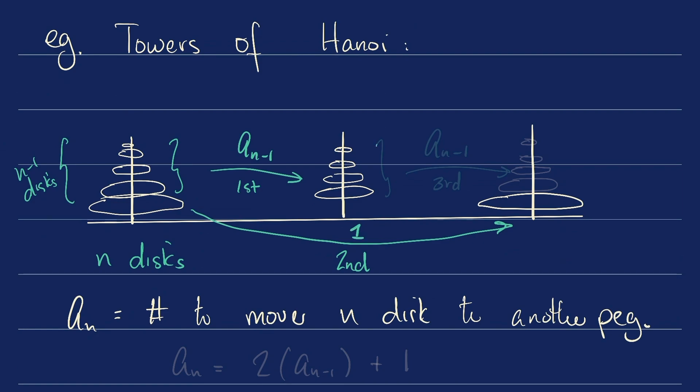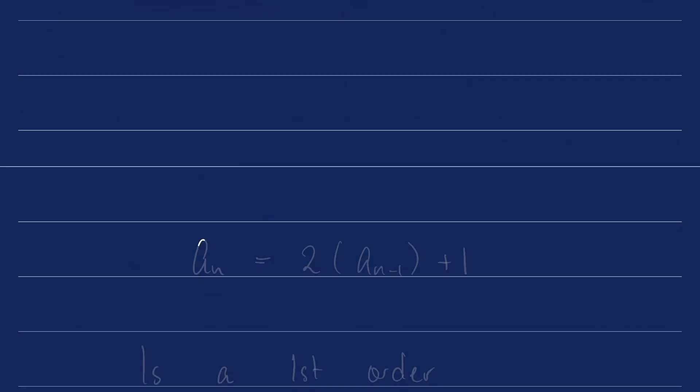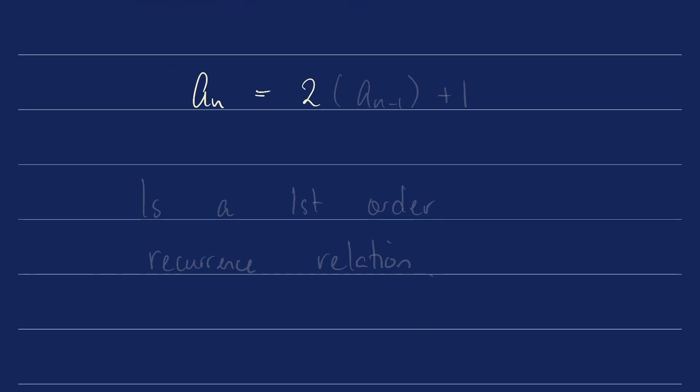And then we're going to take all of these and stack them on top. That again takes a_(n-1) moves. So what we get is the recurrence relation. a_n is going to be 2a_(n-1) + 1. And note that a_n = 2a_(n-1) + 1 is a first order recurrence relation.